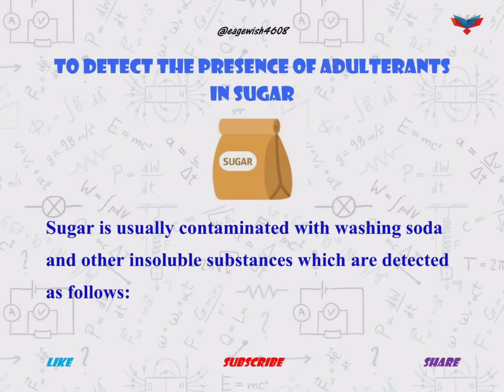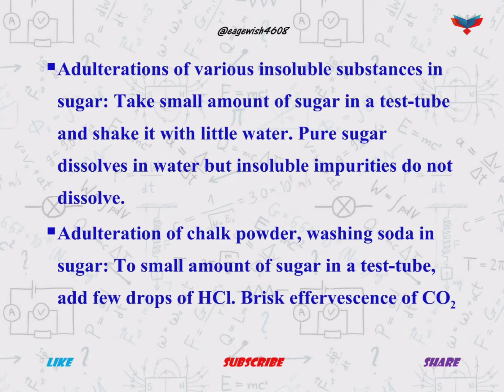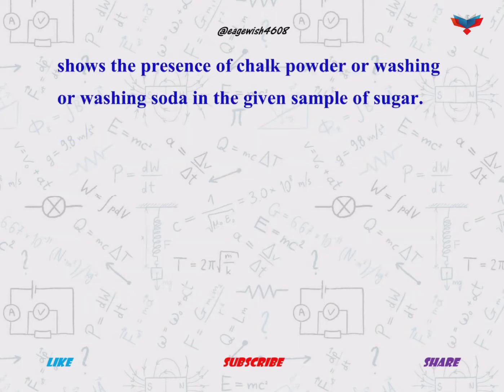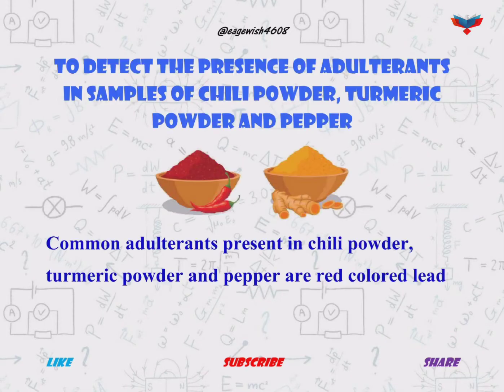After that we will write the steps to detect the presence of adulterants in sugar. At last we will write the steps to detect the presence of adulterants in chili powder, turmeric powder, and pepper.